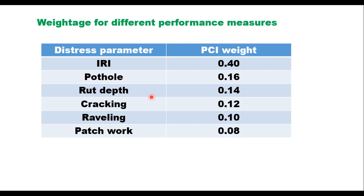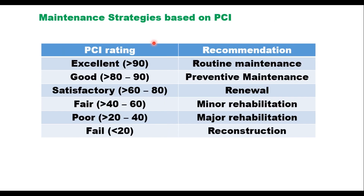Once the overall PCI is calculated, maintenance strategy can be decided. IRC suggests that if PCI is above 90, only routine maintenance is sufficient. If PCI is 80 to 90, preventive maintenance is needed. For 60 to 80 (satisfactory), a renewal course is required. For 40 to 60, minor rehabilitation is needed. Below 40 requires major rehabilitation or sometimes reconstruction.